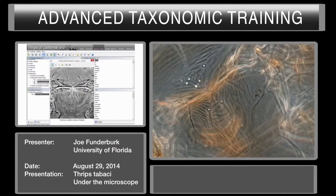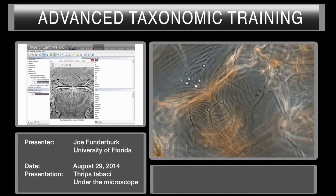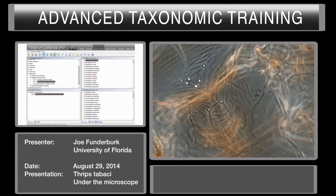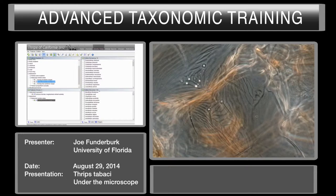We generate an image that indeed looks like our actual specimen. One of the nice things about this key is that for most features there is an illustrated image to compare. It's very obvious that the CD arises behind the anterior margin, so I've chosen that. Now we have 168 species discarded and 74 species remaining that have those two characters we've chosen so far.